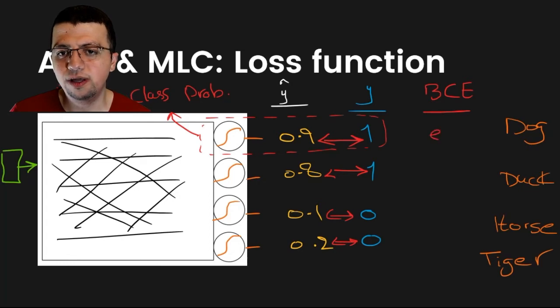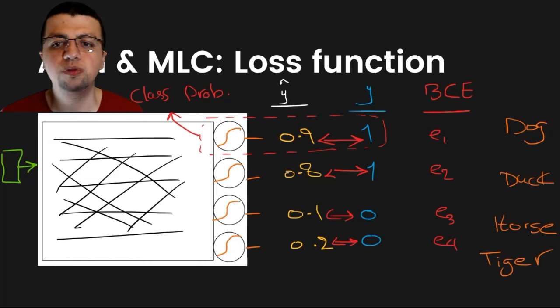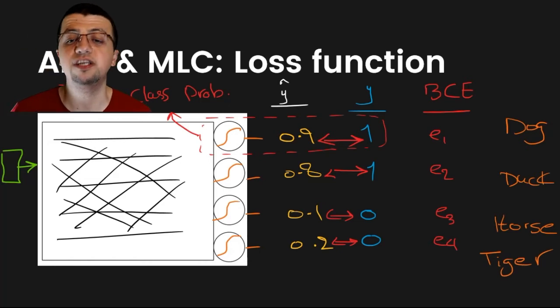So, you get these four elements in your error vector. You get, let's call this e1, these are just values. Error 3, error 4.